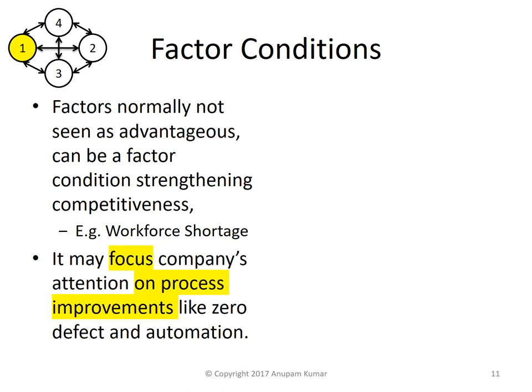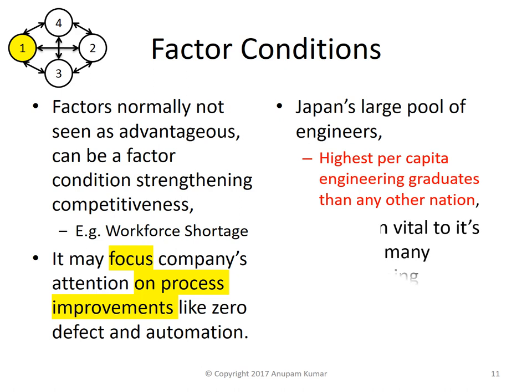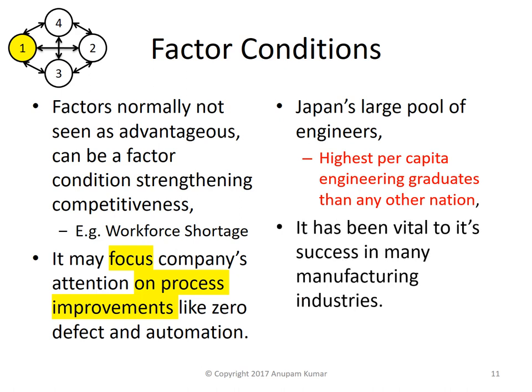Similarly, there could be other factor conditions. For example, Japan has the largest pool of engineers — the highest per capita engineering graduates of any nation. This factor has been vital to its success in manufacturing industries.